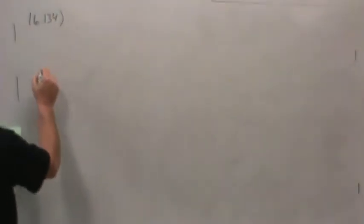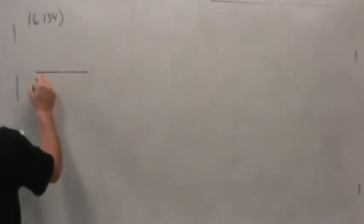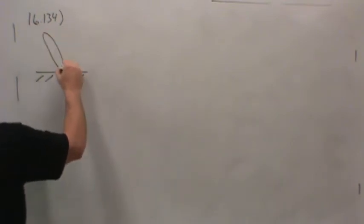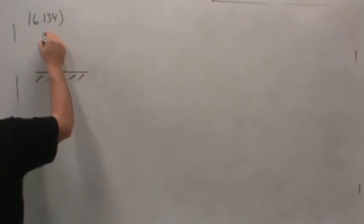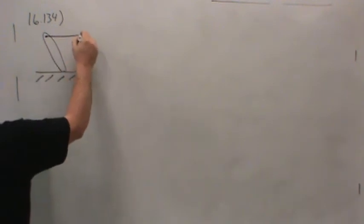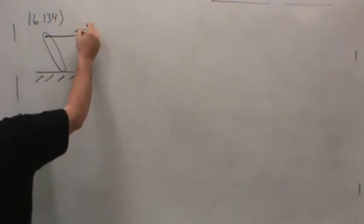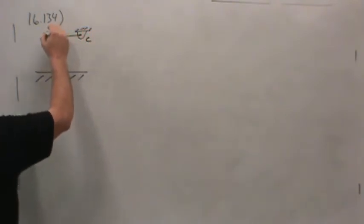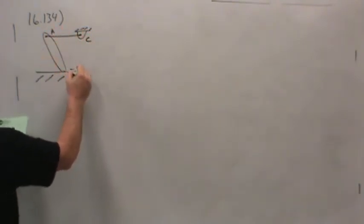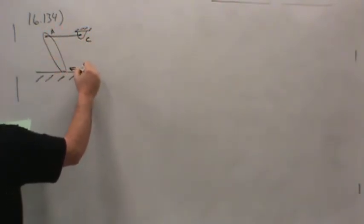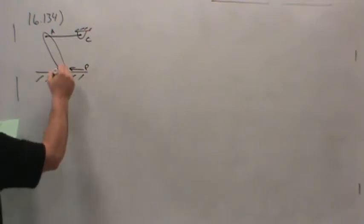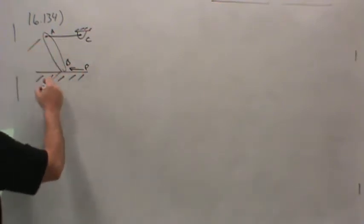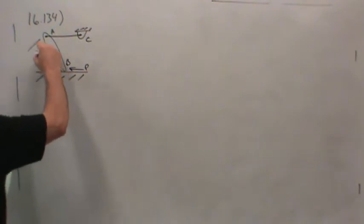So the schematic of what we're looking at looks like this. Here's the cable. This is point C over here. This connection point is A. Force P is down on the ground pushing on the rod at B. And the length of this thing total is 5 feet.